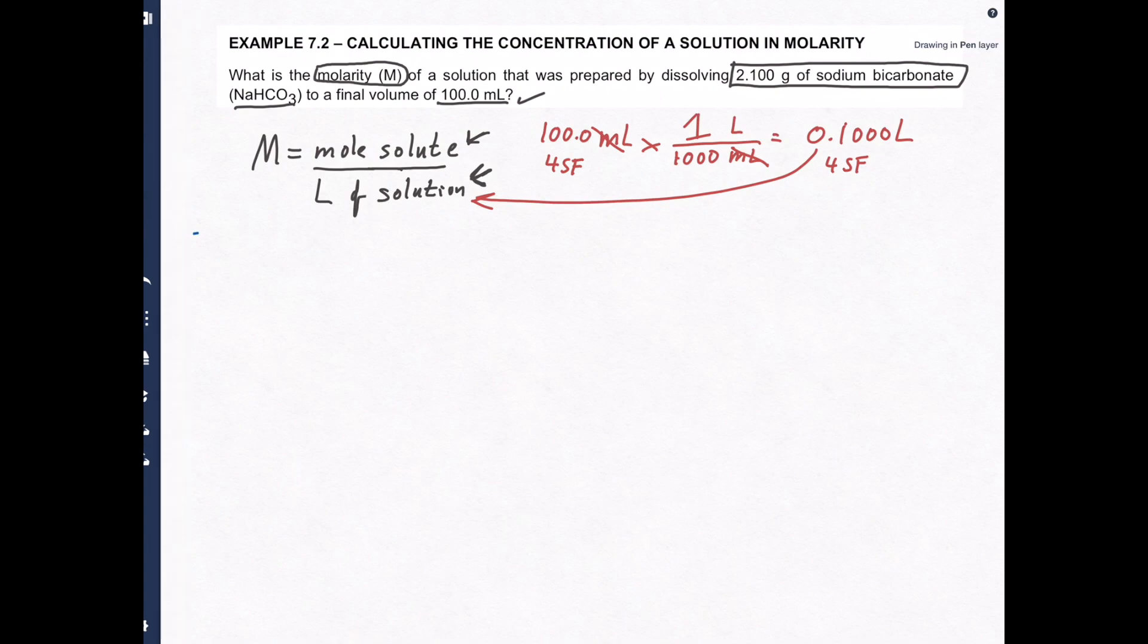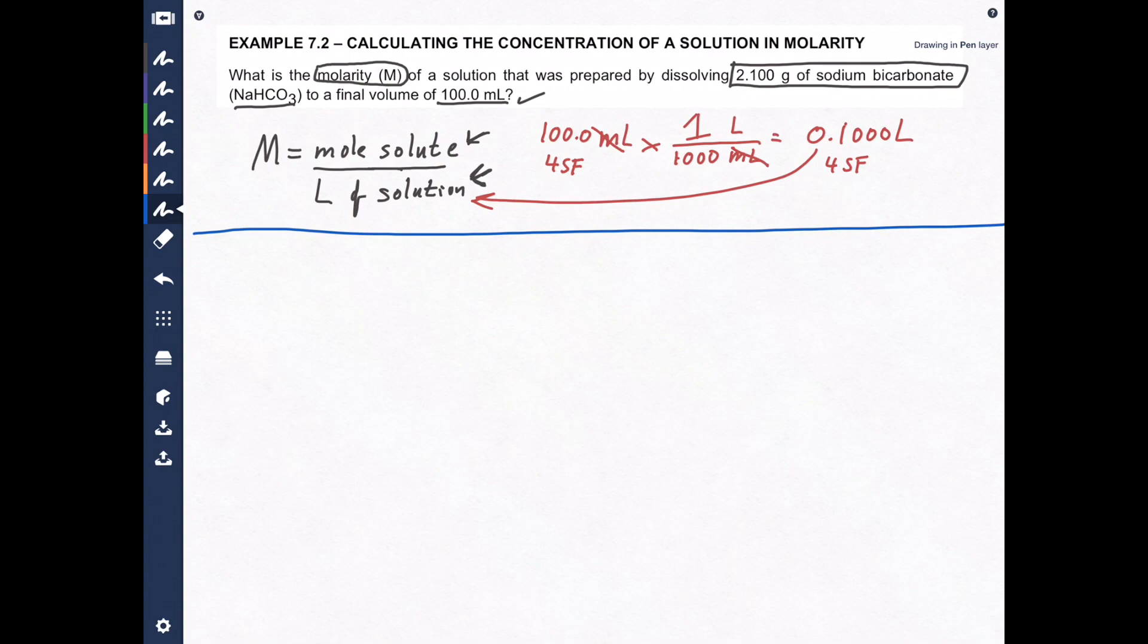Now we don't know, because the question doesn't tell us, we don't know how many moles of sodium bicarbonate we have, but we do know the mass. We know that we have 2.100 grams and we know that sodium bicarbonate is NaHCO3. With that data we can calculate how many moles we have. We just have to first calculate the molar mass of NaHCO3. Now let's take a few minutes and learn how to do that.